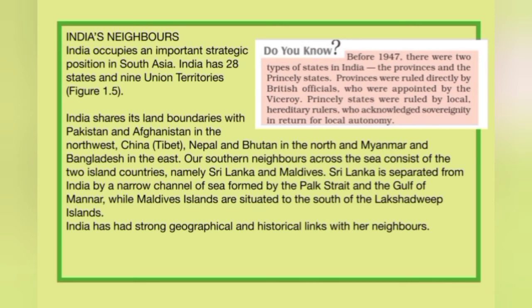Before 1947, there were two types of states in India: the provinces and the princely states. The provinces were ruled directly by British officials appointed by the Viceroy. The princely states were ruled by local hereditary rulers who acknowledged British sovereignty in return for local autonomy.